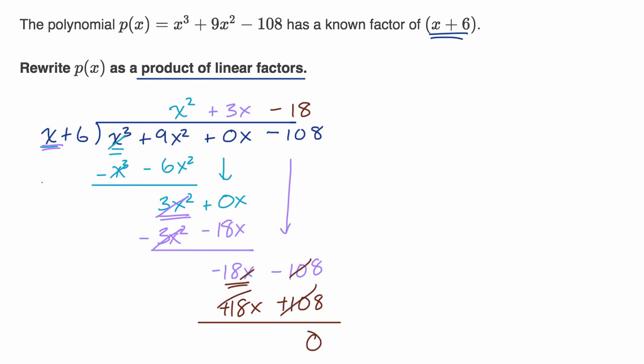And so I can rewrite p(x) as being equal to (x + 6) times (x² + 3x - 18). But I'm not done yet, because this is not a linear factor. This is still quadratic.